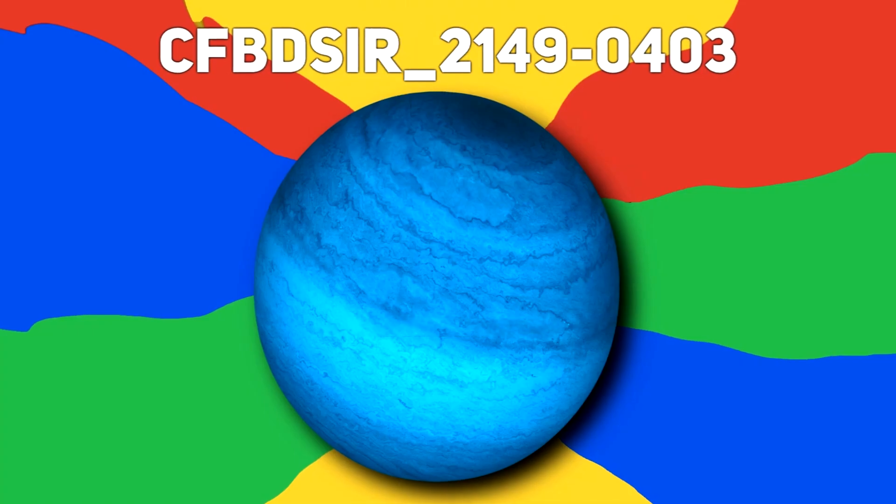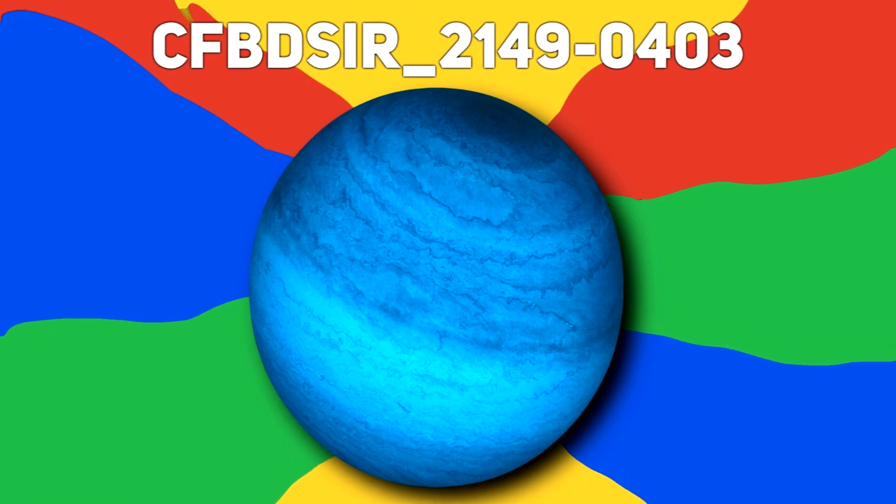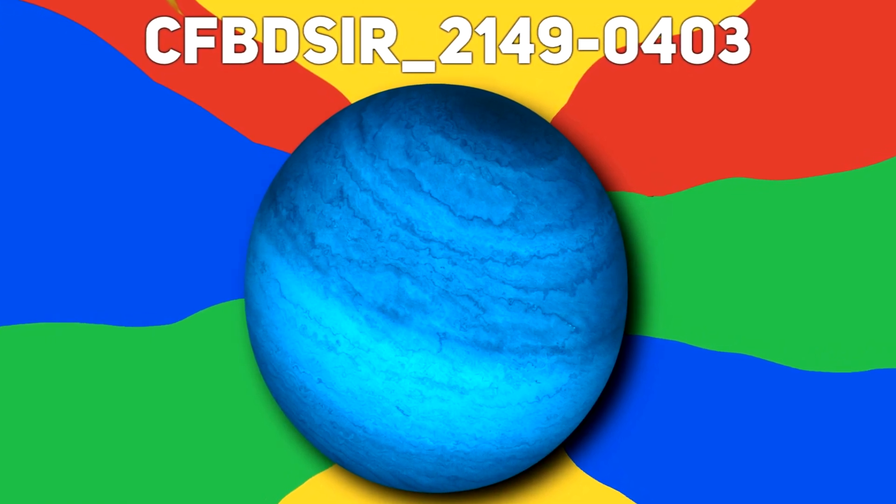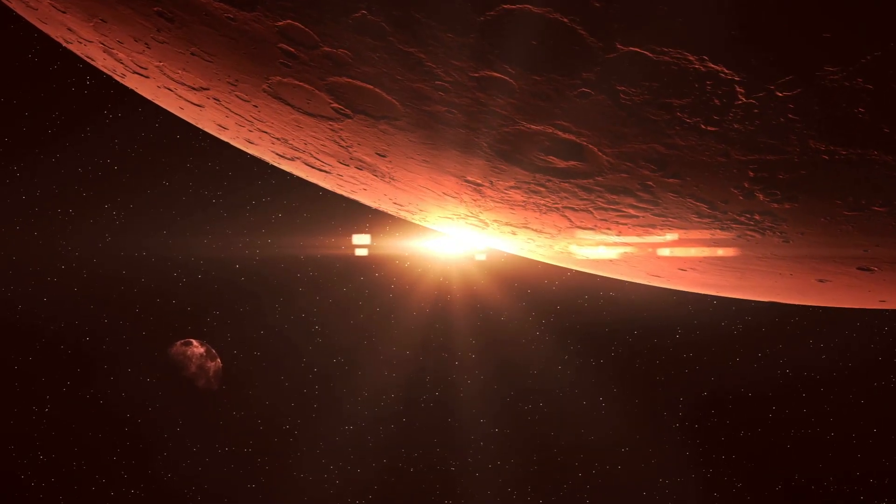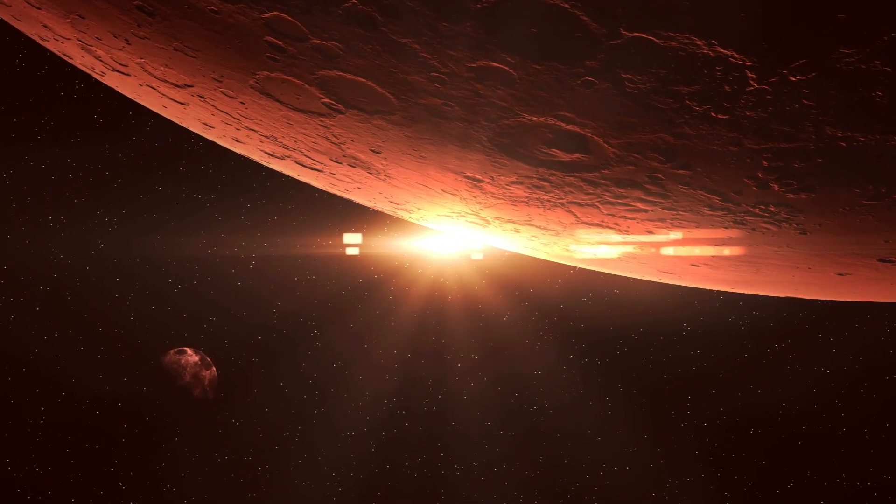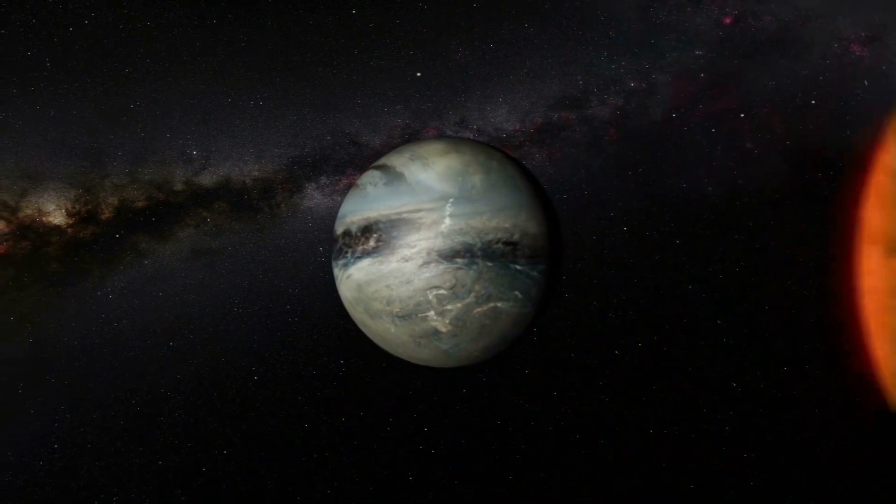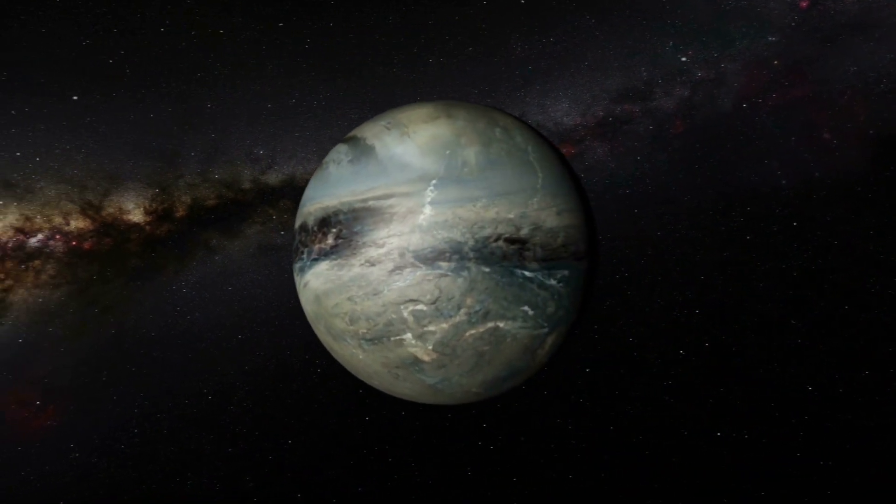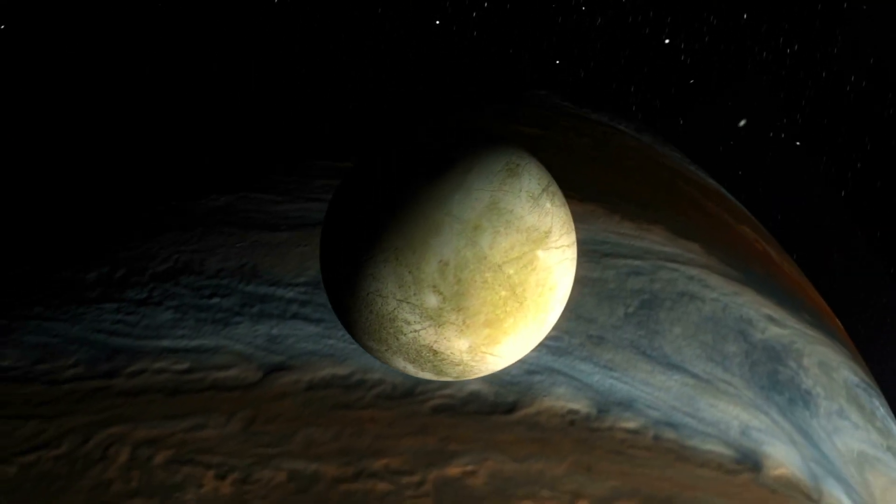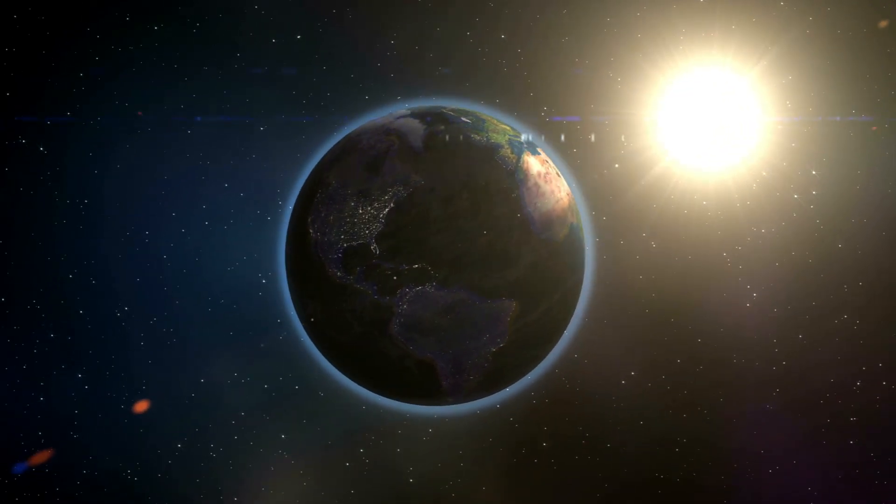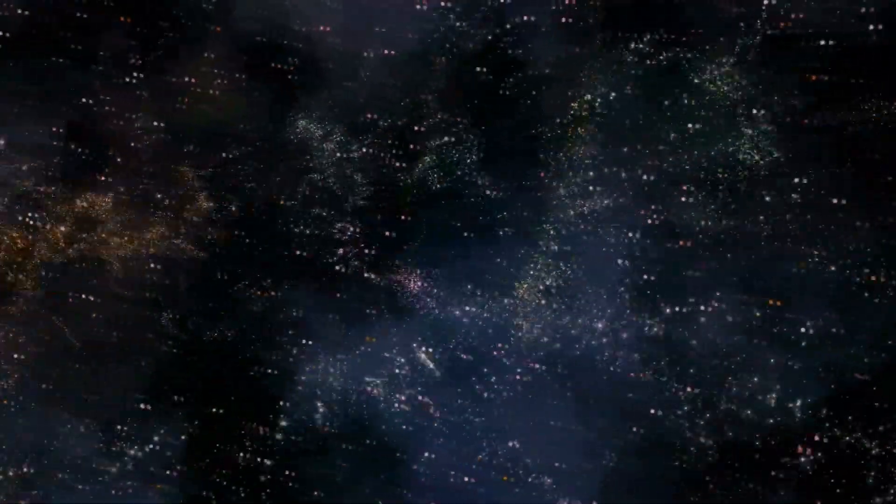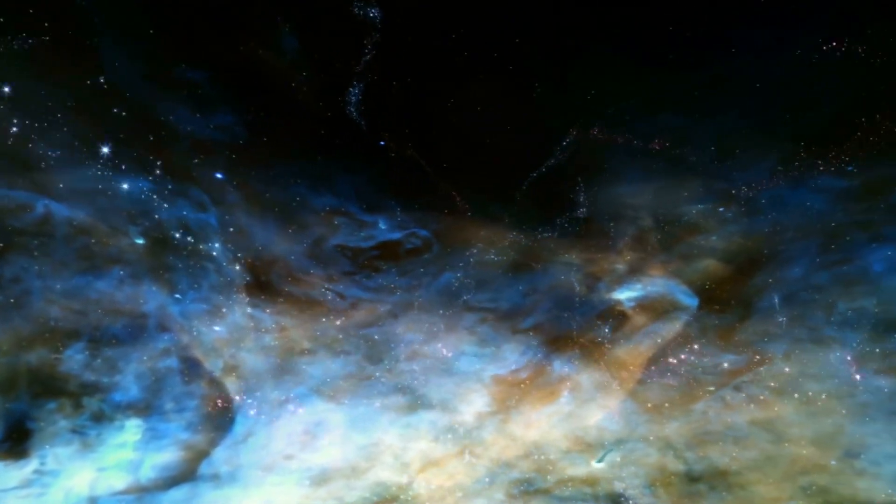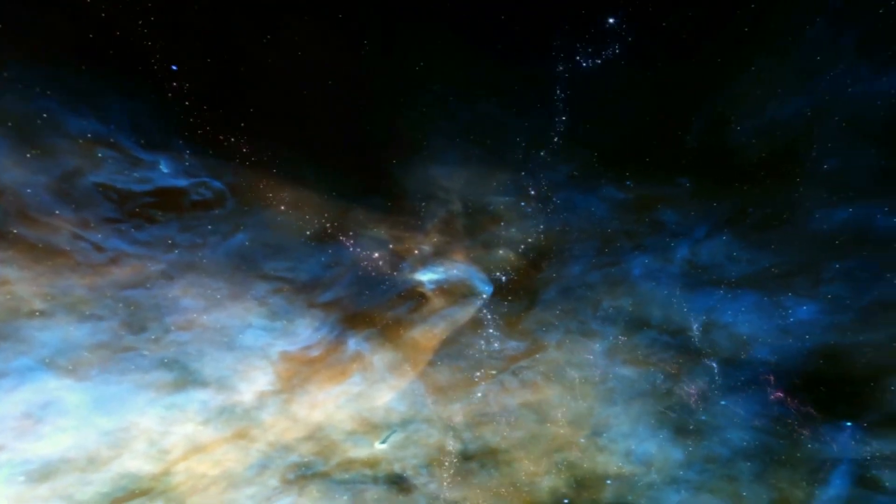Number seven, CFBDSIR-2149-0403. We often think of planets as acting like the ones we know well in our solar system. As a controlled mass that is happily floating around the sun it's nearest to, with maybe a little moon floating around it as well, we think of planets as part of a larger structure, like a solar system or a galaxy. However, this is not always the case, as the next strange thing in this list will prove.